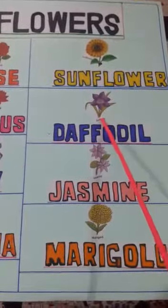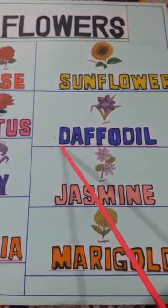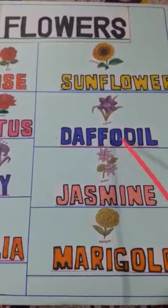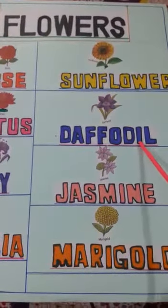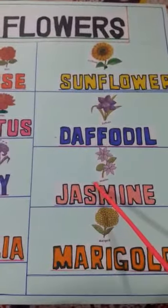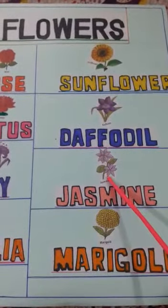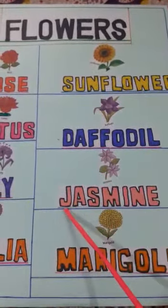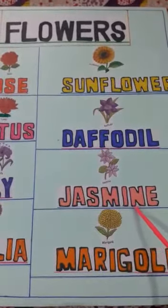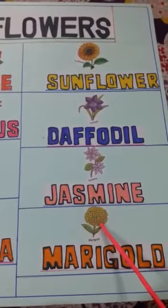Sunflower. This is daffodil, and the spelling is D-A-F-F-O-D-I-L. Daffodil. Children, which flower is this? This is jasmine, which has a nice smell.